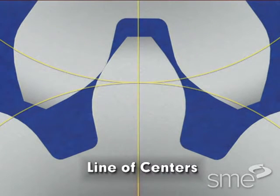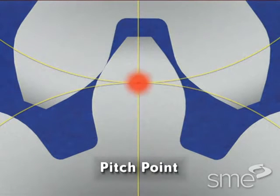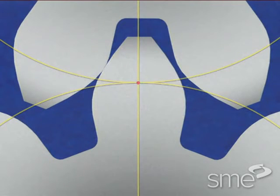The line of centers is the line connecting the pitch circle centers of two mating gears. The pitch point is the point of tangency of two mating gear pitch circles through the line of centers.